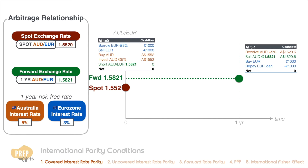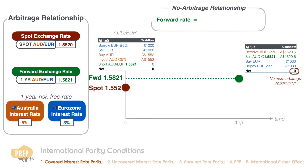This continues until the forward rate is at a no-arbitrage level against the spot rate. When the forward rate is increased to 1.5821, the net cash flow at the end of the year to the arbitrageur is zero. This equilibrium level for the forward exchange rate is defined by the no-arbitrage relationship between the forward rate, spot rate, and interest rates. As the interest rates are annualized, you should adjust them by the number of days to maturity.